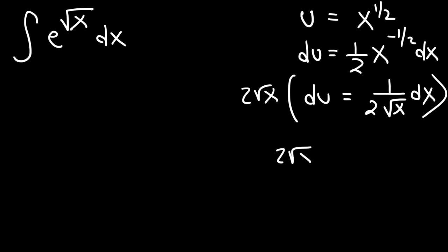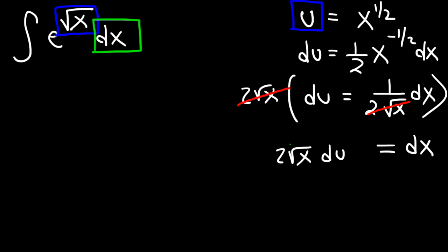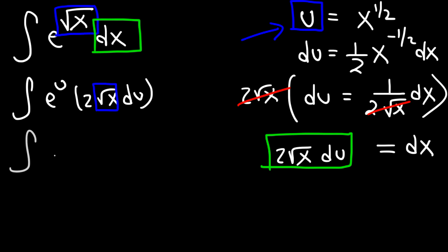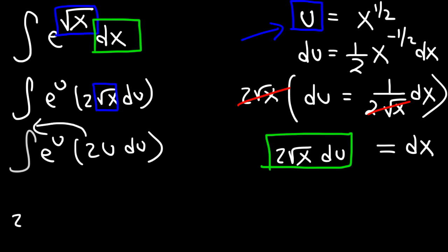On the left side we're going to have 2 square root x du, and on the right side dx — these two will cancel, so we're just going to have dx on the right side. So let's replace the square root of x with the u variable, since they're equal to each other, and replace dx with 2 square root x du. This gives us the integral of e to the u times 2 square root x du. Now we can replace the square root of x with u again, giving us the integral of e to the u times 2u du. Moving the constant to the front, we have 2 times the integral of u e to the u du.